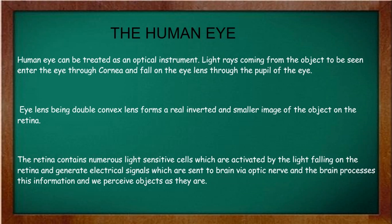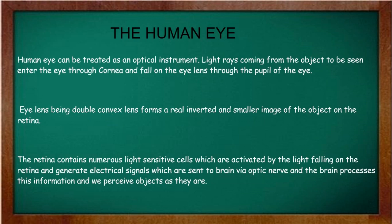Light rays coming from the object to be seen enter the eye through the cornea and pass through the pupil to fall on the eye lens. The light then goes to our retina, which forms a real, inverted, and smaller image of the object. The eye lens is a double convex lens.